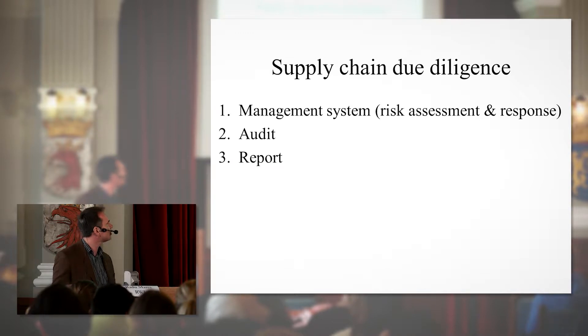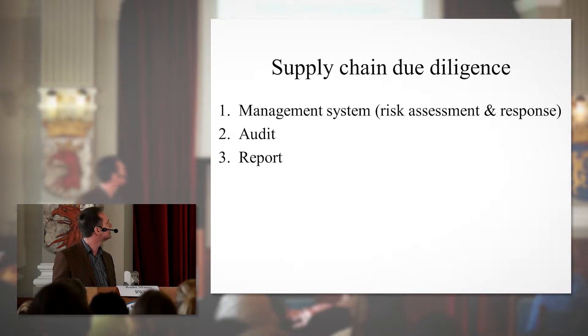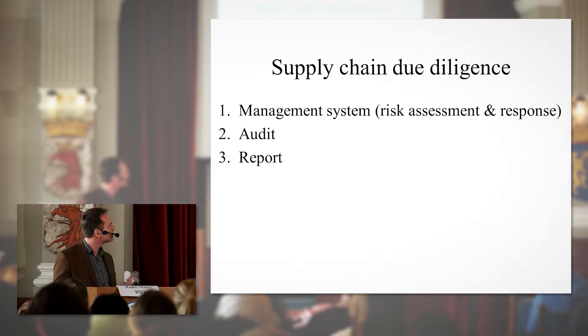Companies have to undertake due diligence on the minerals that they extract and trade. What does that mean? It means a management system — basically risk assessment and risk management — then getting audited by a third party, and then disclosing information, whether to consumers or to your buyers. If you are upstream in the supply chain, you have to disclose information to your buyers, so the chain of traceability starts to work.